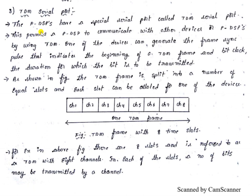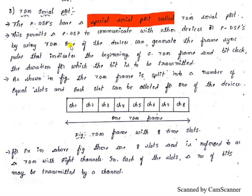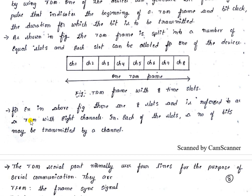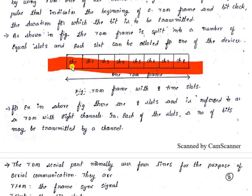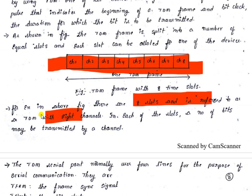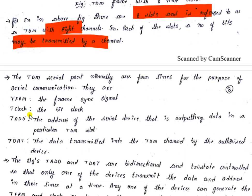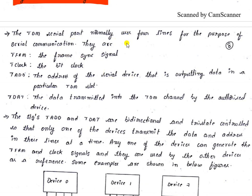Programmable DSPs have a special serial port called the TDM — Time Division Multiplexing — serial port. One device generates frame synchronous pulses indicating the beginning of a TDM frame, along with a bit clock for the duration a bit is to be transmitted. A TDM time frame consists of eight bits, with channels CH1 through CH8, referred to as TDM with eight channels.